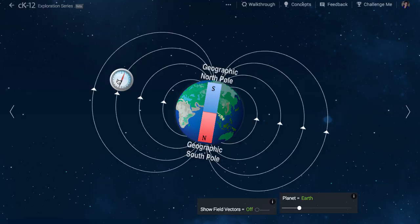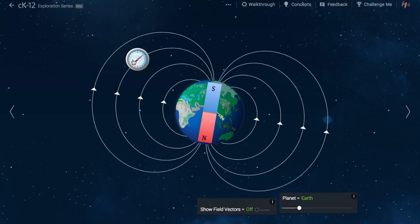A compass needle aligns with these field lines, which is why the north pole of a magnet points towards the Earth's magnetic south pole, located at our geographic north pole. How confusing is that?